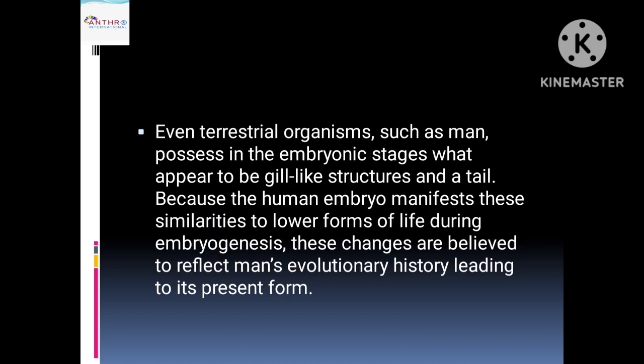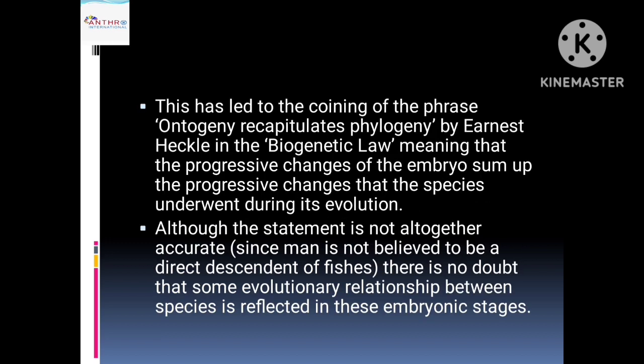Even terrestrial organisms such as man possess, in the embryonic stage, what appears to be a gill-like structure and a tail. In the embryonic stage, a human child also has gills like a fish and a tail. Because the human embryo manifests these similarities to lower forms of life during embryogenesis, these changes are believed to reflect man's evolutionary history leading to its present form. Darwin said that we have common ancestors.